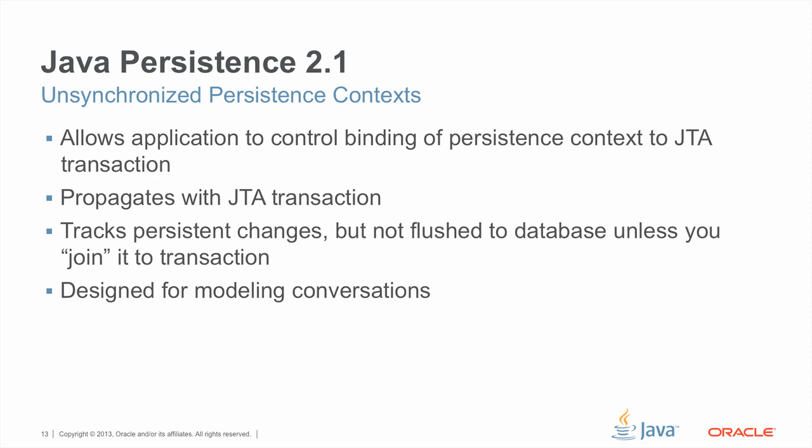Unsynchronized persistence contexts allow the application to control the binding of the persistence context to the JTA transaction, and hence its behavior when that transaction might cause the persistence context to be flushed to the database. In the case of container managed persistence contexts, they propagate with the JTA transaction regardless of whether they are bound to that transaction or not. So these persistence contexts track persistent changes as your application modifies the persistence context, but they're not flushed to the database unless you join the persistence context to the transaction itself. They're particularly useful in modeling conversations.